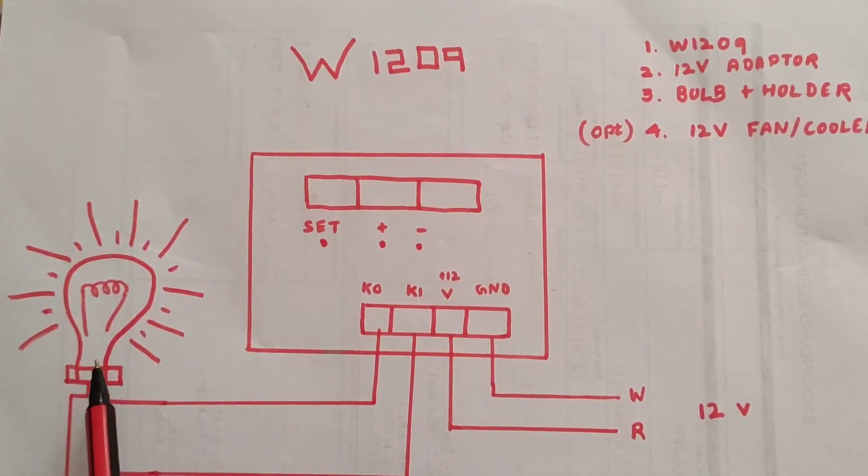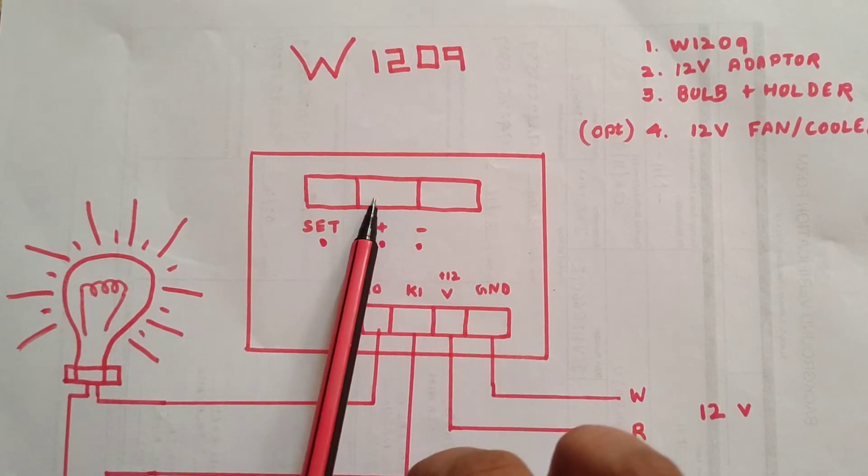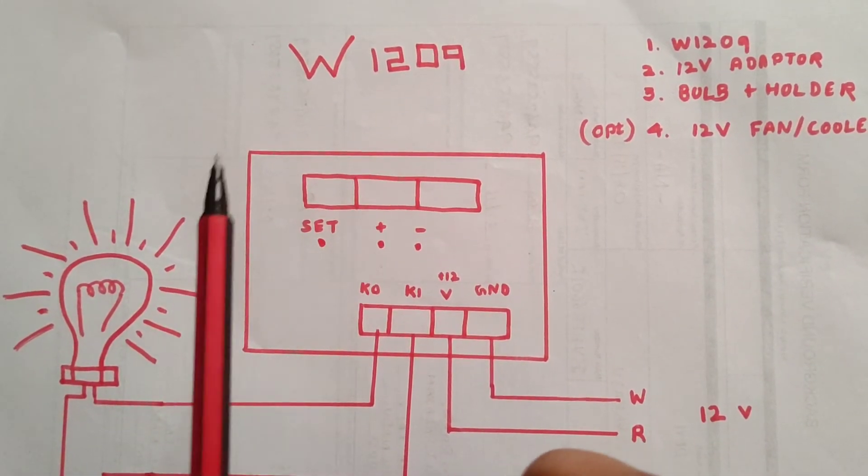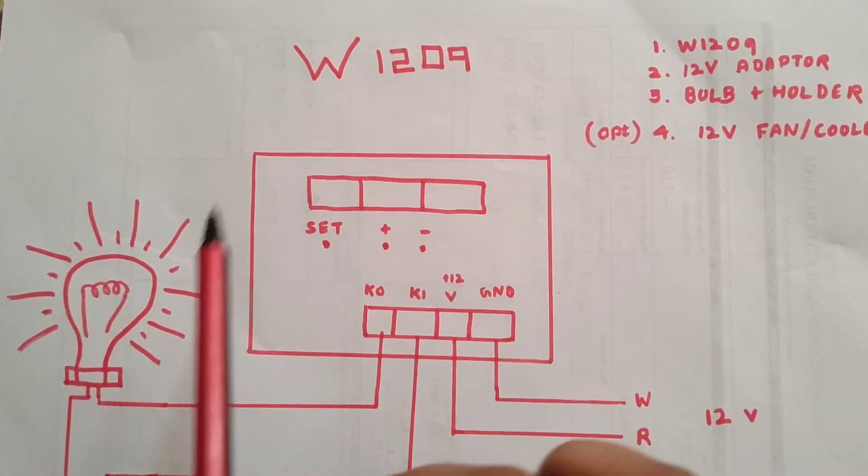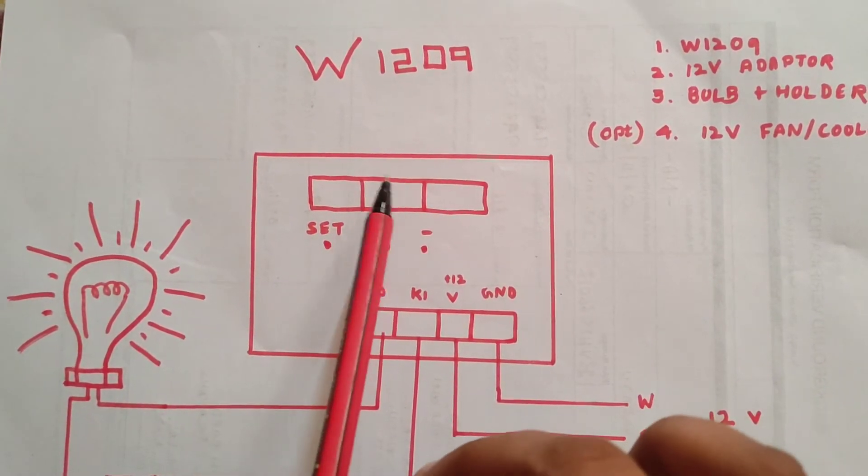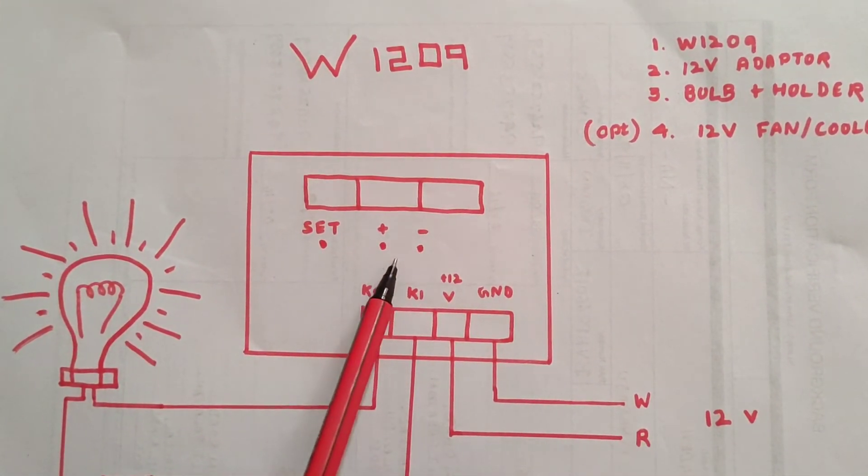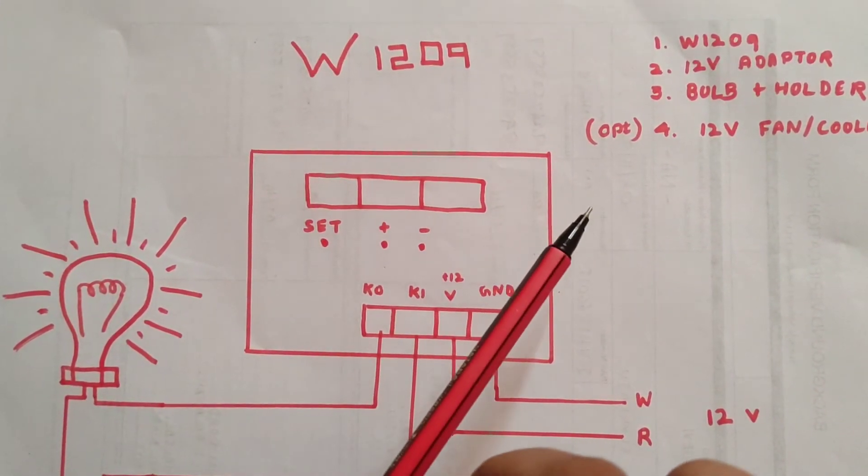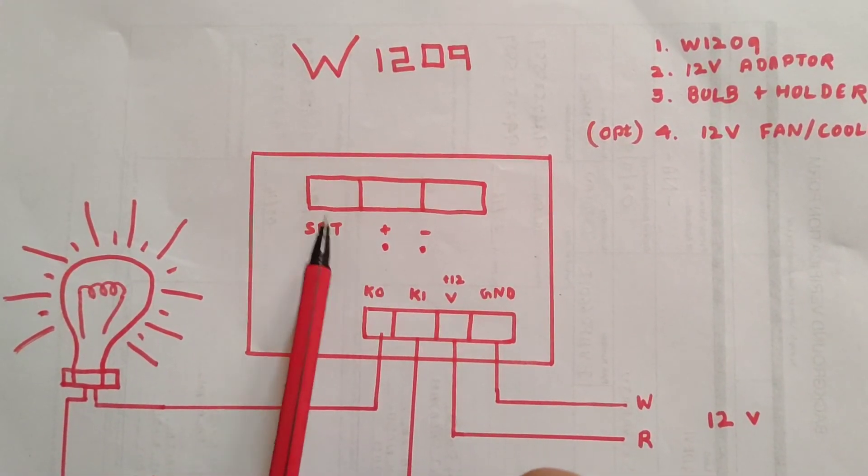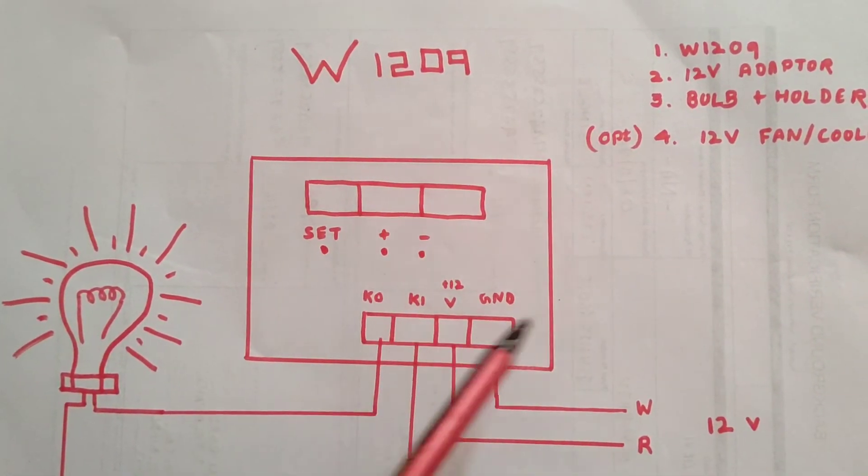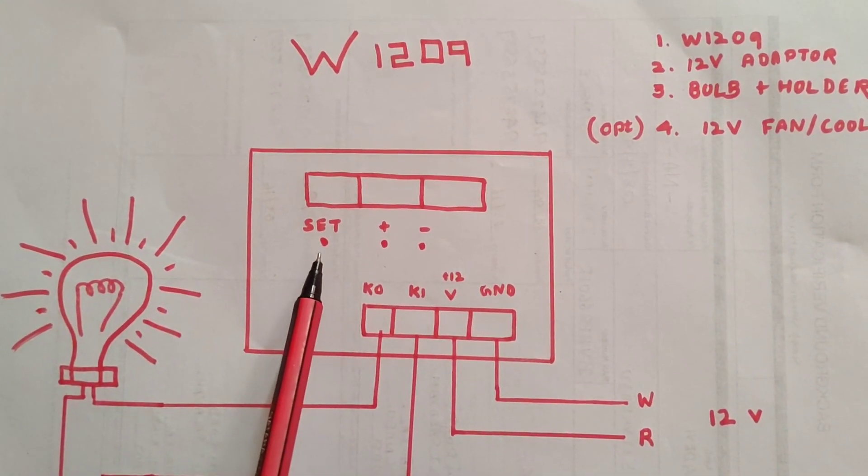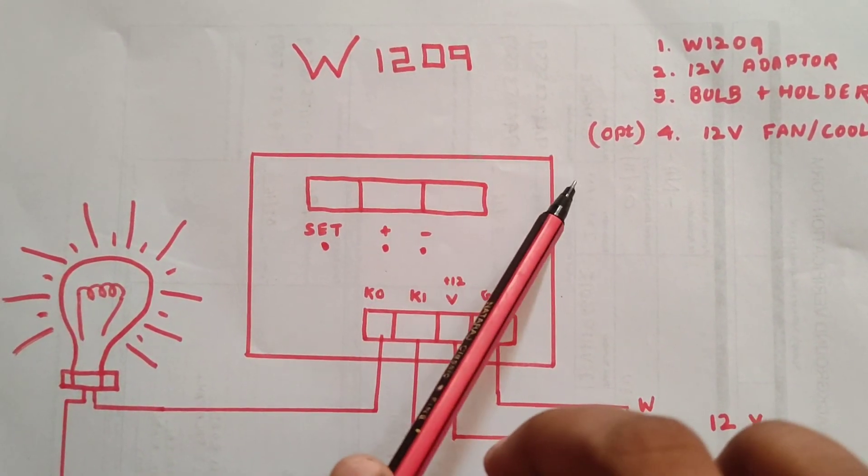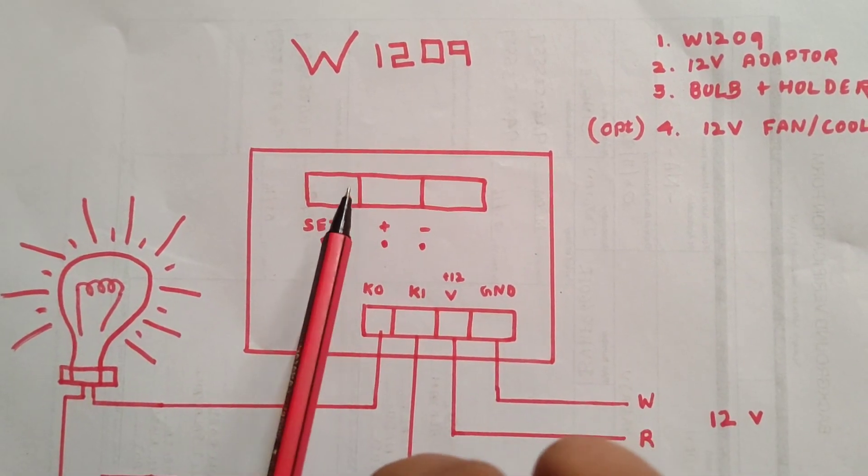Now we set the bulb. The temperature will be around 36.9 degrees. We will set the modes P0 through P6. Set the temperature between 37 and 36.5 degrees.